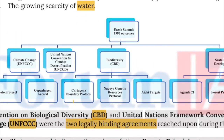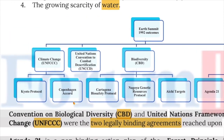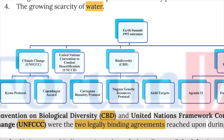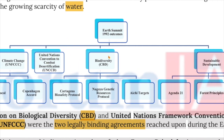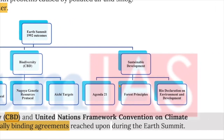The 1992 Earth Summit had four outcomes. The first is UNFCCC, with two major branches: Kyoto Protocol and Copenhagen Accords. Then there was the United Nations Convention to Combat Desertification. For biodiversity, the Convention on Biological Diversity (CBD) was created with three legs: Cartagena Biosafety Protocol, Nagoya Genetic Resource Protocol, and Aichi Targets. For Sustainable Development, we have Agenda 21, Forest Principles, and Rio Declaration on Environment and Development.